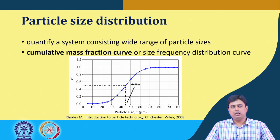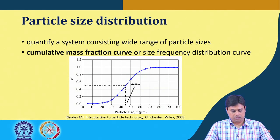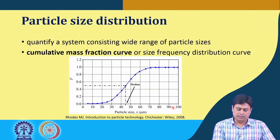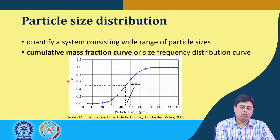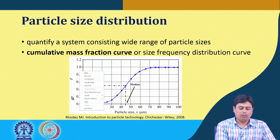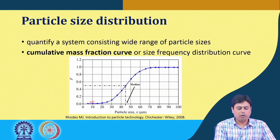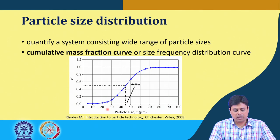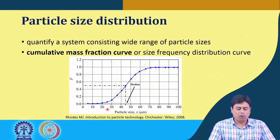A very simple way to represent that is by a frequency distribution or cumulative mass fraction curve, as shown in this slide. The x-axis is the particle size and the y-axis is what we call the cumulative mass fraction. The mass fraction of a sample sums to essentially 1. This curve shows that for a certain particle size, whatever mass fraction of particles is below that size is plotted.